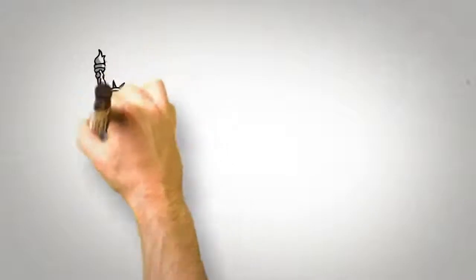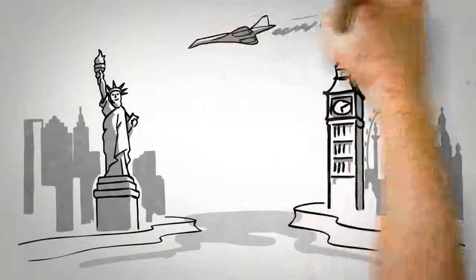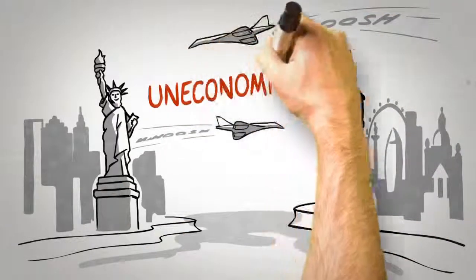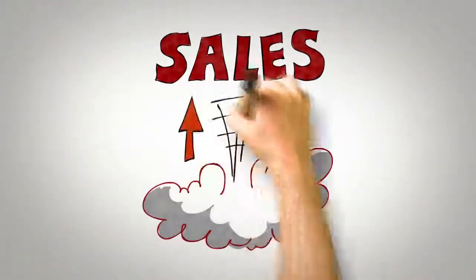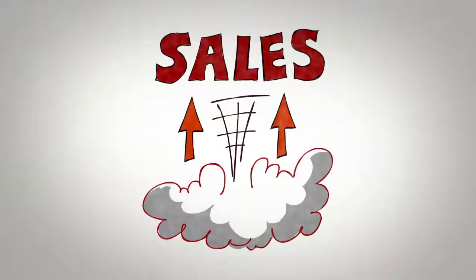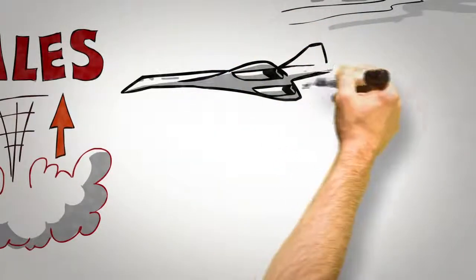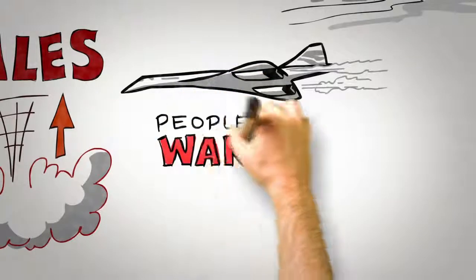When British Airways announced in 2003 that they would no longer be operating the twice-daily London-New York Concorde flight because it had become uneconomical to run, sales the very next day took off. Notice that nothing had changed about the Concorde itself. It certainly didn't fly any faster, the service didn't suddenly get better, and the airfare didn't drop. It had simply become a scarce resource, and as a result, people wanted it more.